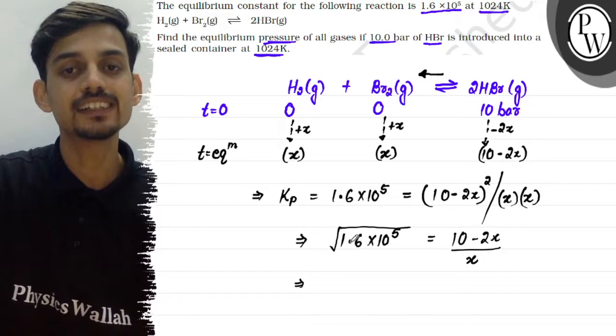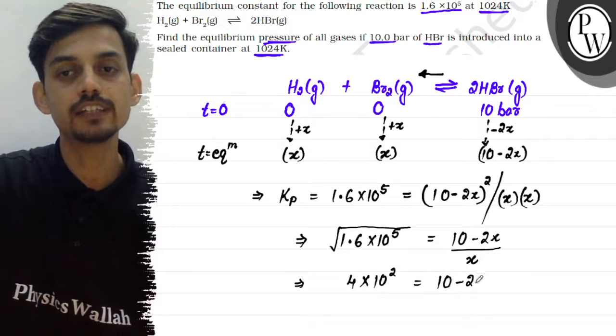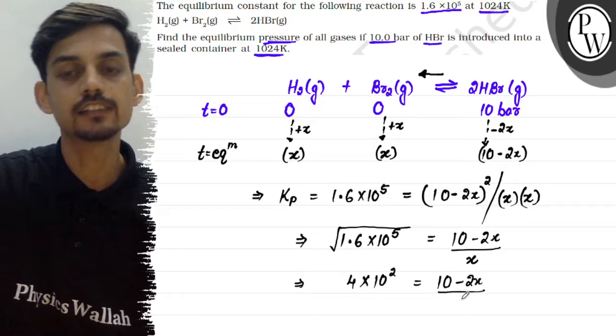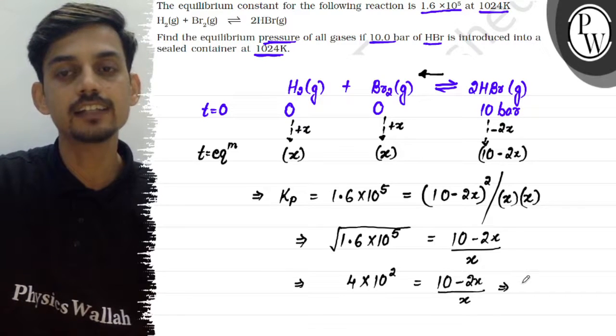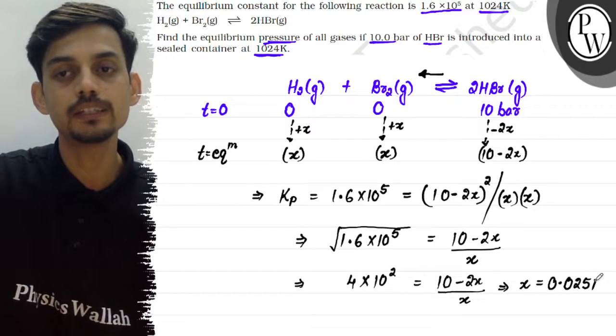This can be written as 16 × 10^4, so this becomes 4 × 10². This equals (10 - 2x)/x. Solving for x gives x = 0.025 bar.